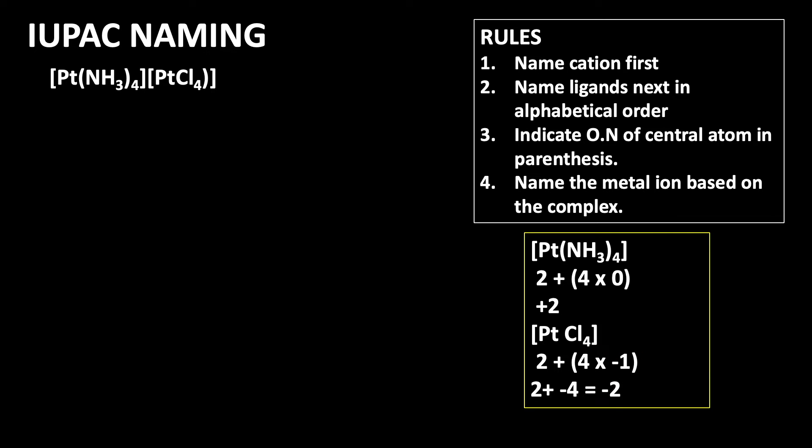Using this information, we're going to find out the IUPAC name of the compound. So let us write it. First, the first one is the cationic complex. Platinum is the central ion.